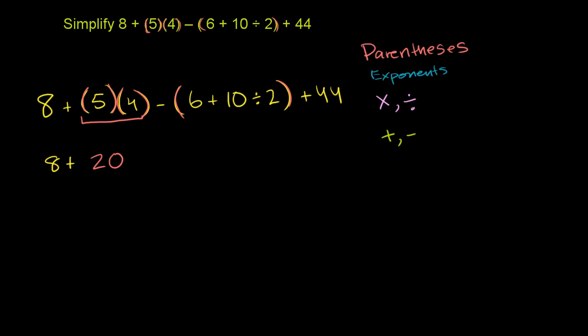let me stay consistent with the colors, minus, now let me write the next parentheses right there. And then inside of it, we need to evaluate this first. So let me close the parentheses right there. And then we have plus 44.